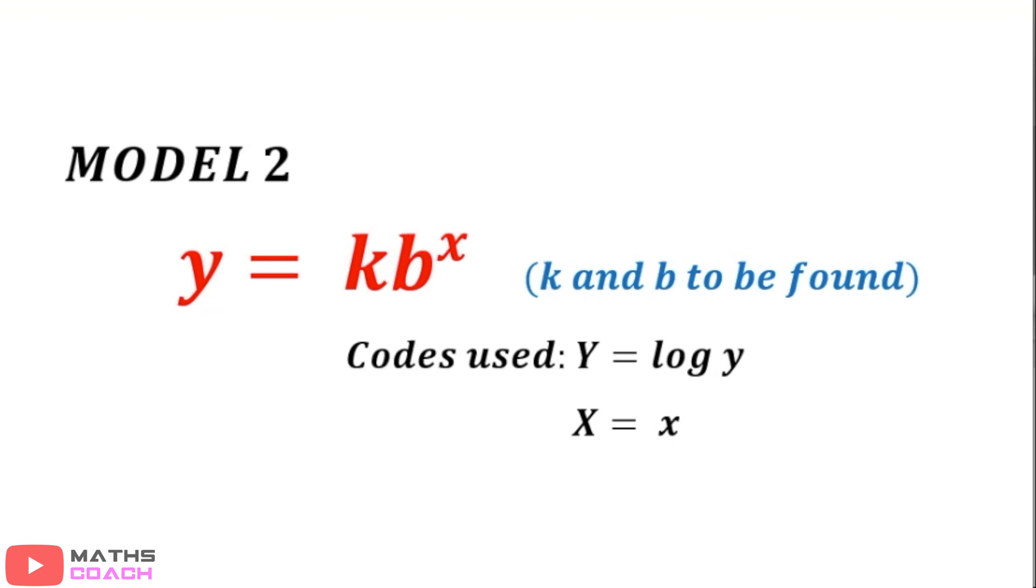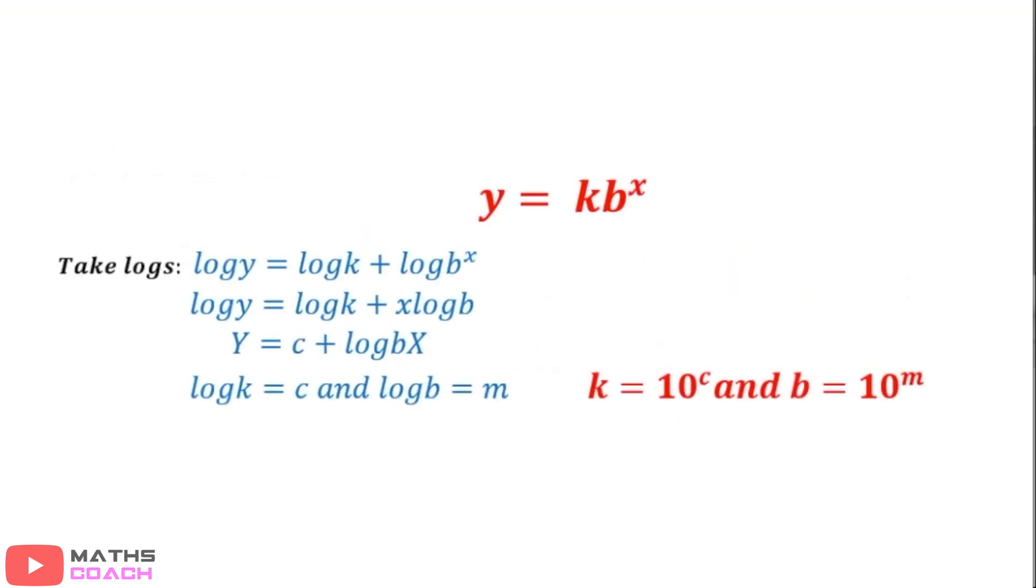So, if we move on from model 2, go to the next line, we're going to take logs, like we did before, of both sides. We have log y equals log of k, plus log bx, again a separation with an add. We then go to the second line, where we can move that power x as a coefficient. So, we have log y equals log of k, plus x, x log b.